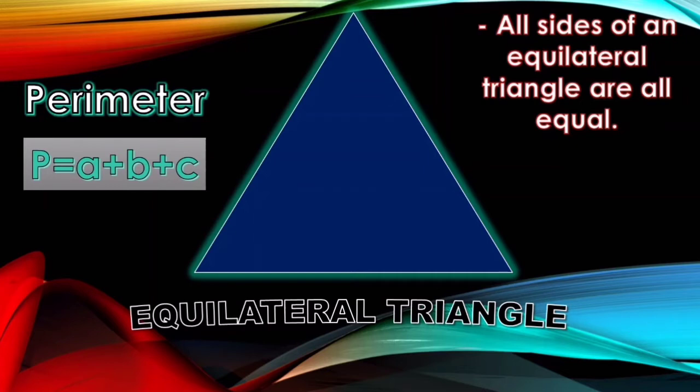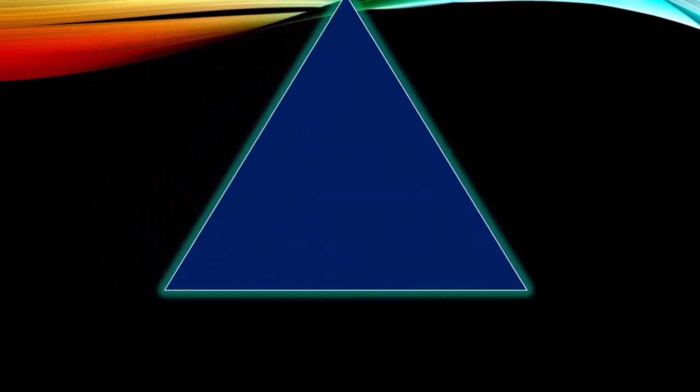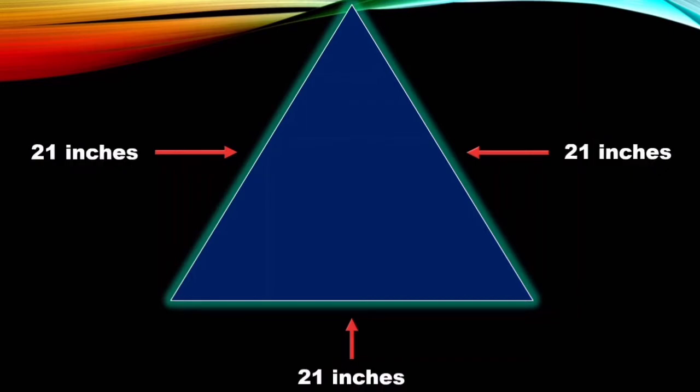That is, P is equal to a plus b plus c. Here is an example where each side of an equilateral triangle is equal. That is why, when one side has 21 inches, the other two sides also have 21 inches because their lengths are equal.